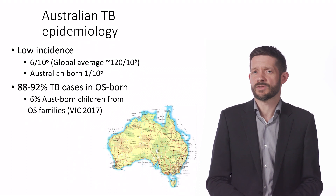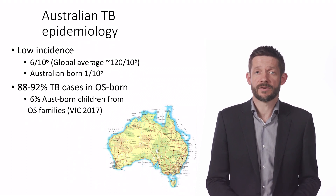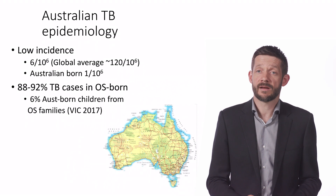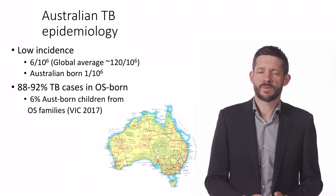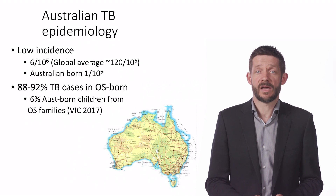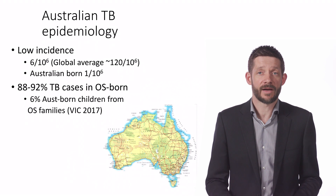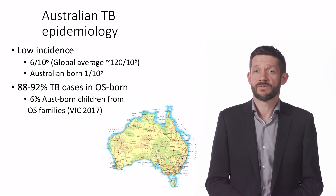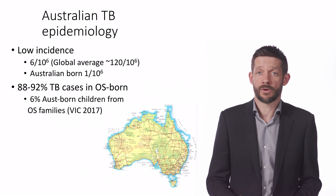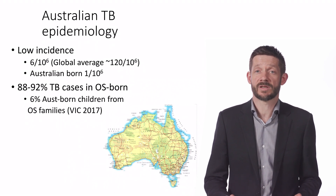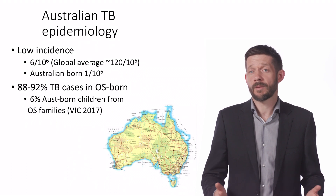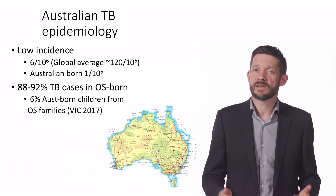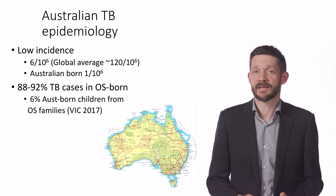So who does get TB in Australia? By global standards, our rates are low, particularly in people who are born here in Australia. Around 90% of people who get active TB in Australia have been born overseas, primarily in countries with much higher risk of TB exposure. We have state and territory TB programs which work to identify anyone exposed locally, and a combination of those programs and small numbers overall mean that people living in Australia are quite unlikely to get infected locally.